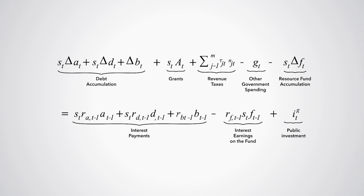In the DIG and DIGNAR models, the dynamic path of public investment, grants, and concessional borrowing are set exogenously.